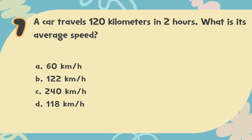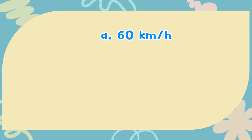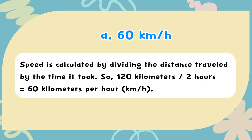The correct answer is A. 60 km per hour. Speed is calculated by dividing the distance traveled by the time it took. So, 120 km divided by 2 hours equals 60 km per hour.